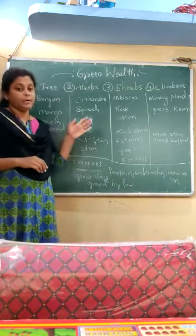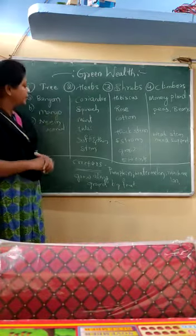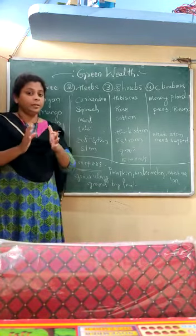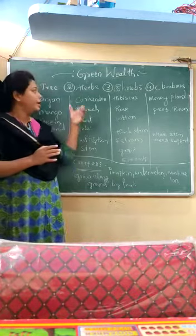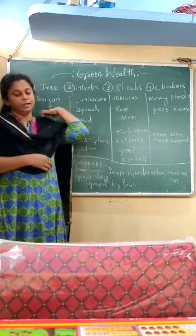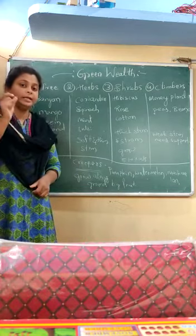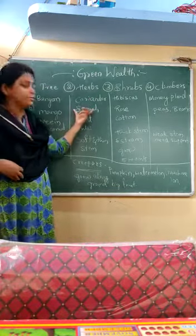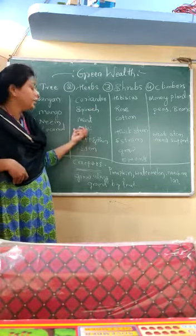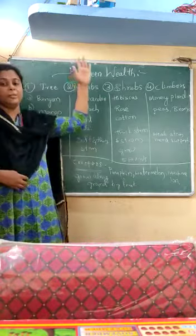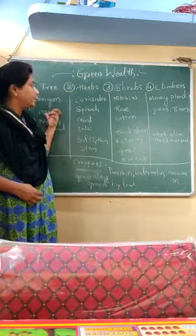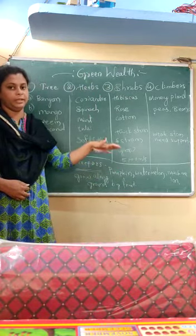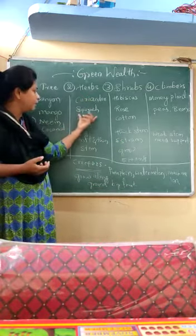The second type is herbs. Herbs are plants with very soft and thin stems. For example, coriander, spinach, mint, and tulsi - these are all herbs we eat in our daily food. Compared to trees, which are very big and thick and grow to great heights, herbs have soft and thin stems and grow only to some extent in height.